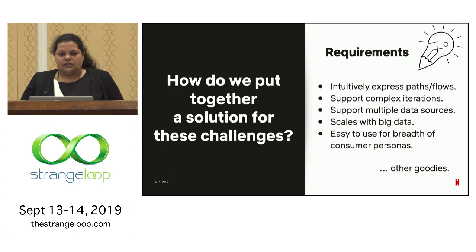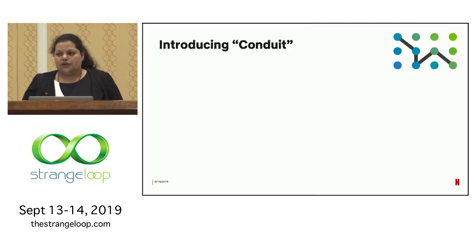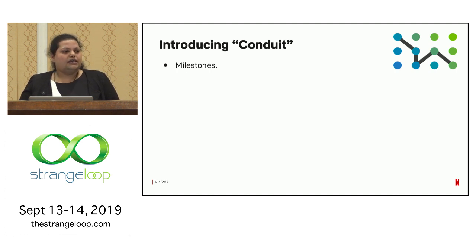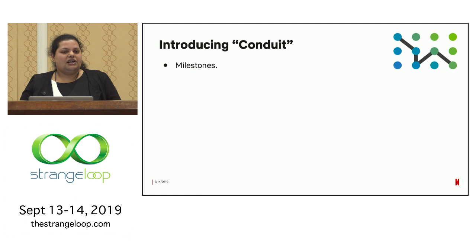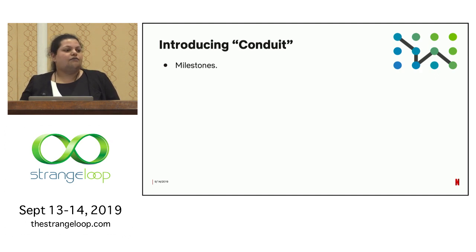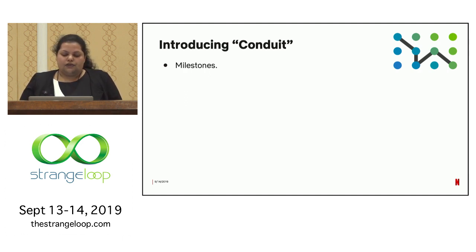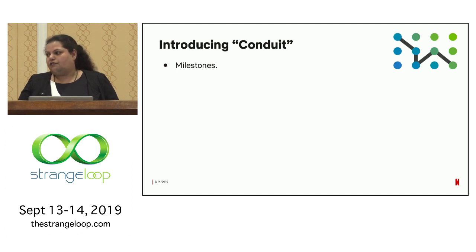With all these requirements in mind, we put together our framework and called it Conduit. What Conduit does is look for milestones across a bunch of events. These events could come from various data sources with different formats and structures — it doesn't matter to Conduit. Conduit really cares about three pieces of information: a timestamp when the event occurred, a name by which it can identify the event, and a unique identifier across all events. If your data set doesn't have a unique identifier, we can always generate one on the fly.